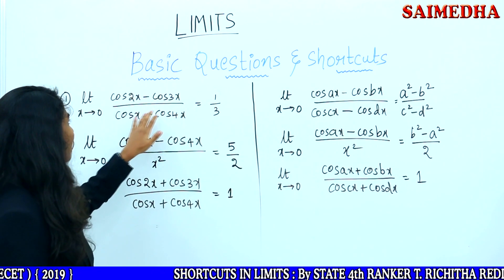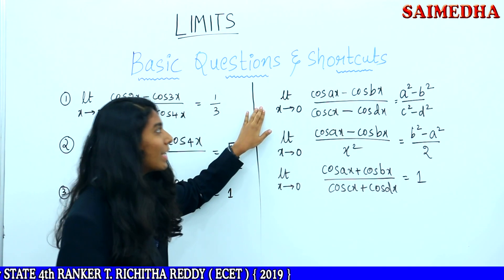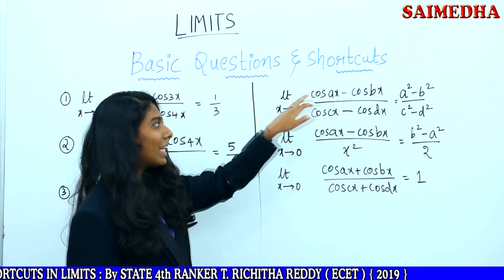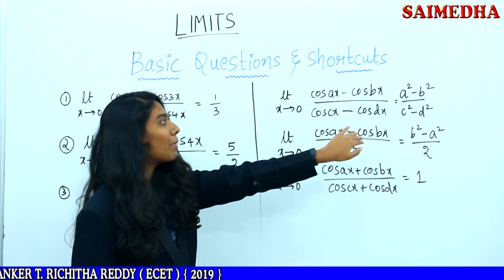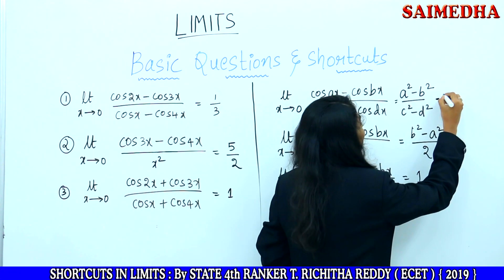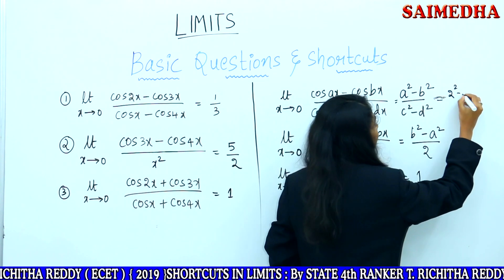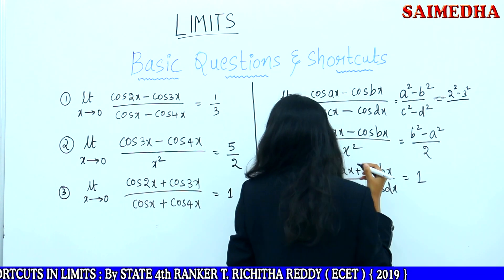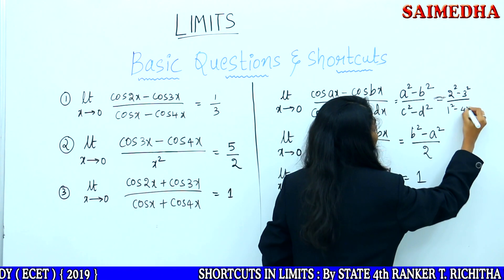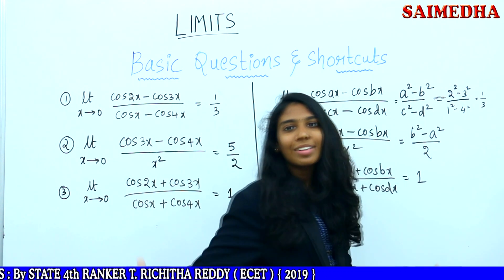Consider: cos 2x minus cos 3x by cos x minus cos 4x. It is in the form of cos ax minus cos bx by cos cx minus cos dx. The shortcut is directly a squared minus b squared by c squared minus d squared. Here a is 2, b is 3, c is 1, d is 4. So: 2 squared minus 3 squared by 1 squared minus 4 squared, which equals 1 by 3. That's it.